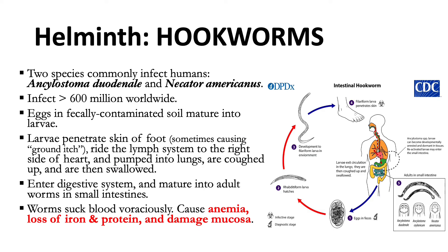The first helminths are hookworms. Two species commonly infect humans: Ancylostoma duodenale and Necator americanus. The life cycle starts with eggs passed in the stool; under favorable conditions, larvae hatch in one to two days and become free-living in contaminated soil. These rhabditiform larvae grow and after five to ten days become filariform, or third-stage, infective larvae. Infective larvae can survive three to four weeks in a favorable environment. On contact with the human host — typically bare feet — the larvae penetrate the skin and are carried through blood vessels to the heart and then to the lungs.